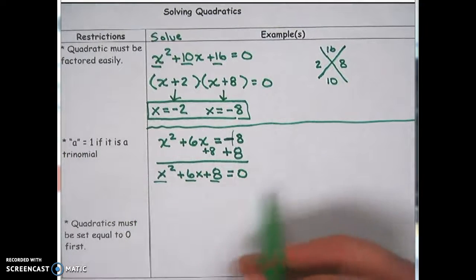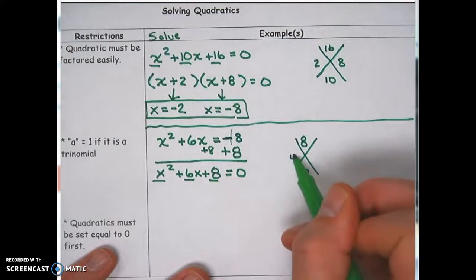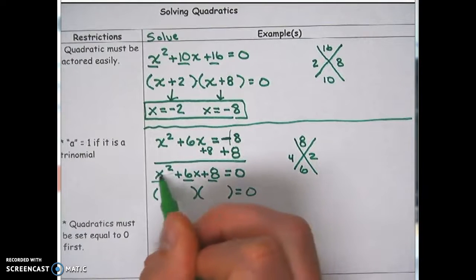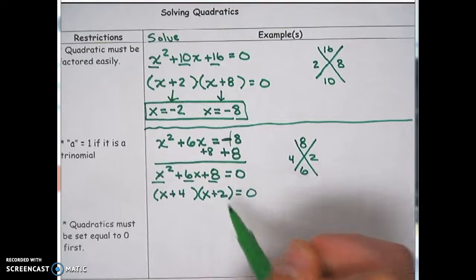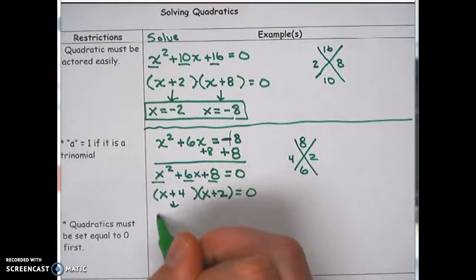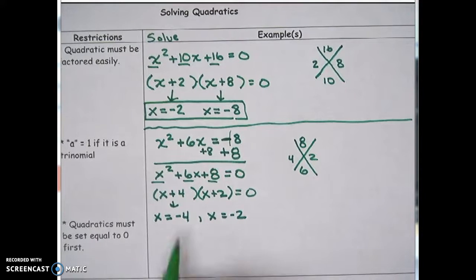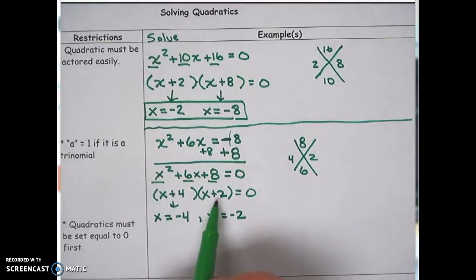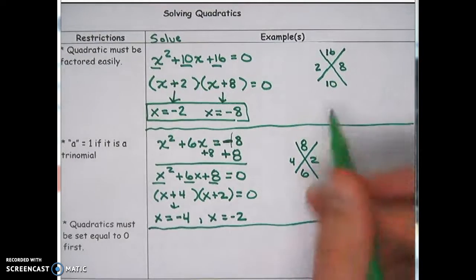The number in front of x² is 1, so we check: is this easily factorable? Can I find numbers that multiply to 8 and add to 6? Yes — 4 times 2 is 8, and 4 plus 2 is 6. So it factors into (x + 4)(x + 2). Using the zero product property, the x value that cancels +4 is -4, and the x value that cancels +2 is -2. So our solutions are x = -4 and x = -2.